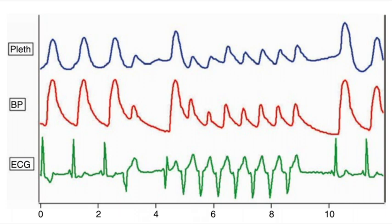In this example, we again see the close relationship between blood pressure recording and pulse oximetry plethysmography. This patient has a run of ventricular tachycardia. During the episode of ventricular tachycardia, blood pressure falls. This is also reflected in the reduction in amplitude in the pulse oximetry waveform. Pulse oximetry, therefore, can provide rapid assessment of patients with hemodynamic compromise.